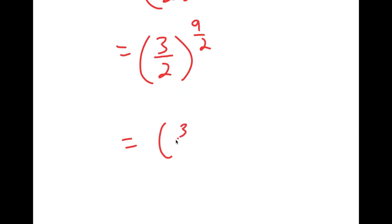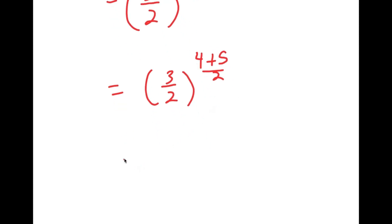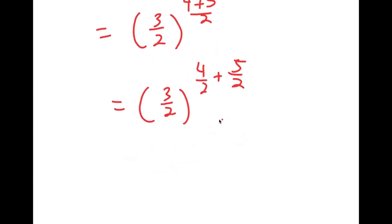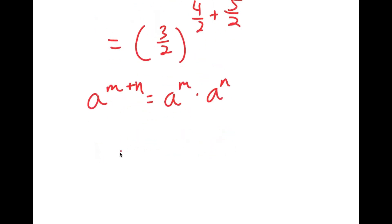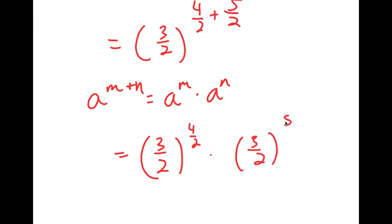Now, 9/2 is the same thing as 4/2 plus 5/2. If I have something in the form a to the power of m plus n, this is equal to a to the power of m times a to the power of n. So this is going to equal (3/2) to the power of 4/2 times (3/2) to the power of 5/2.